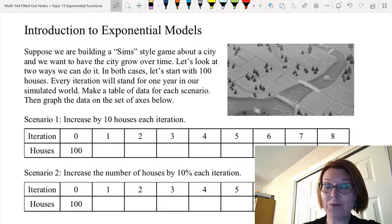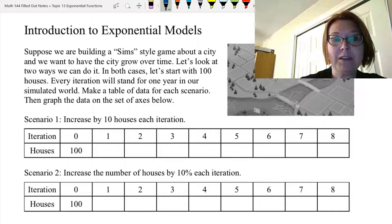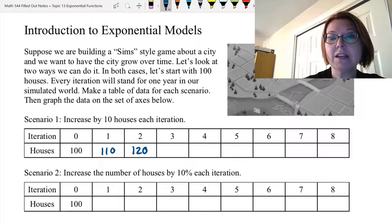In the first scenario we're going to increase by 10 houses each iteration. So this one's pretty simple. If we start with 100 houses and add 10 houses, we would have 110 houses in the first iteration. In the second iteration we would have 120 houses. The third iteration, 130 houses.